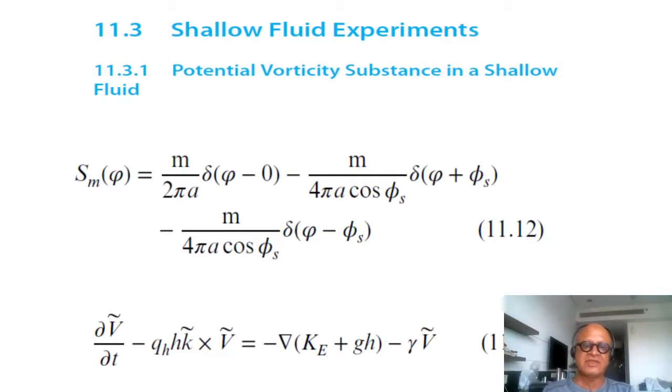So looking at our momentum equation again in an isentropic coordinate hydrostatic, then we have del V tilde DT minus Q H H K tilde cross V tilde where K is again this vector normal to the isentropic surface. H is the mean depth or the isentropic depth because this is the potential vorticity in a shallow fluid is related to the divergence of the kinetic energy V tilde squared plus G H the geopotential.